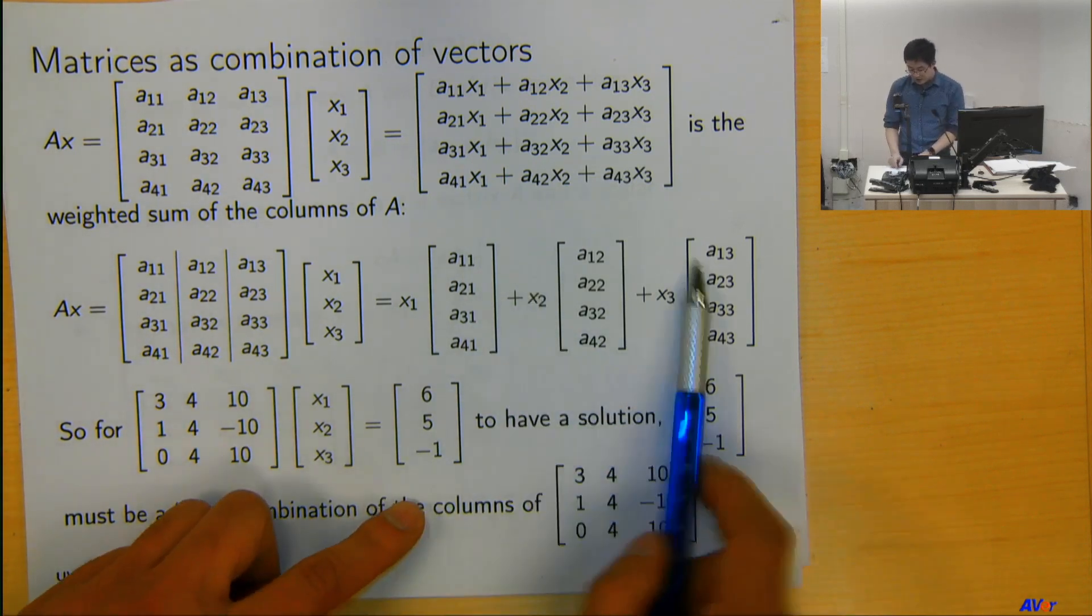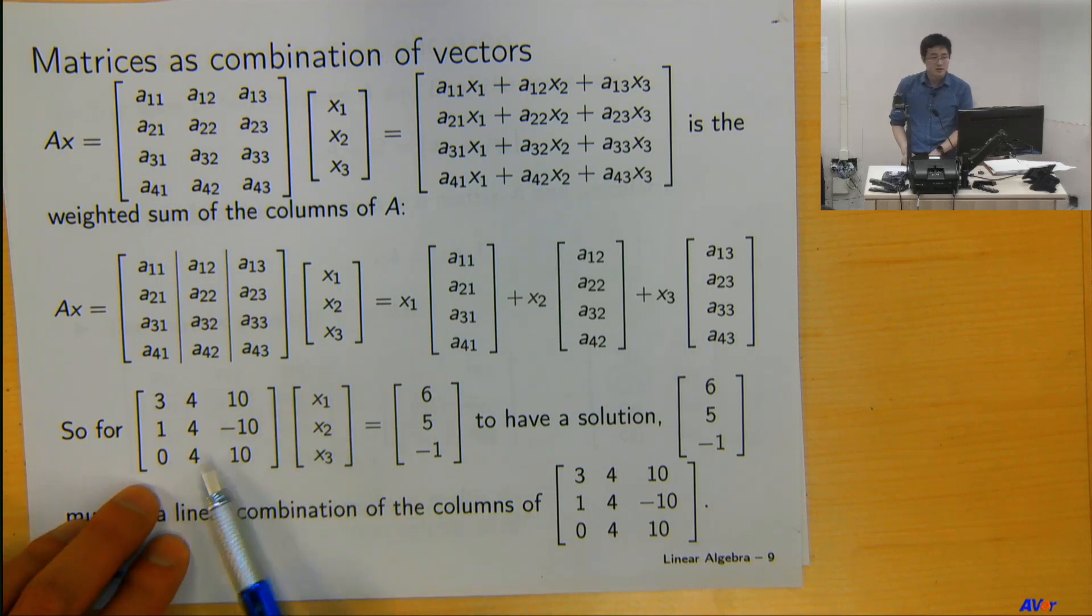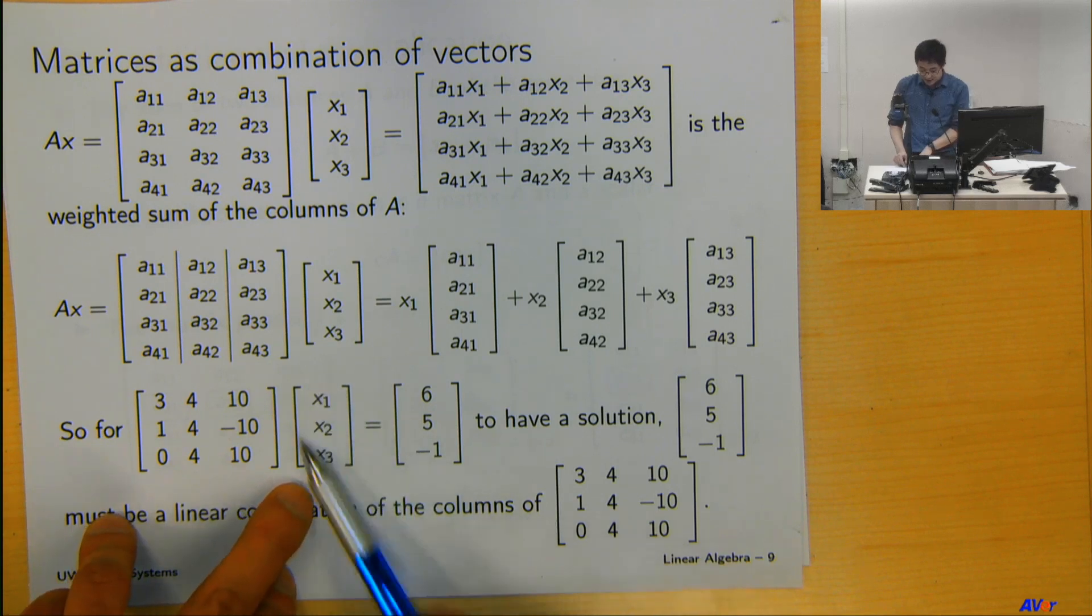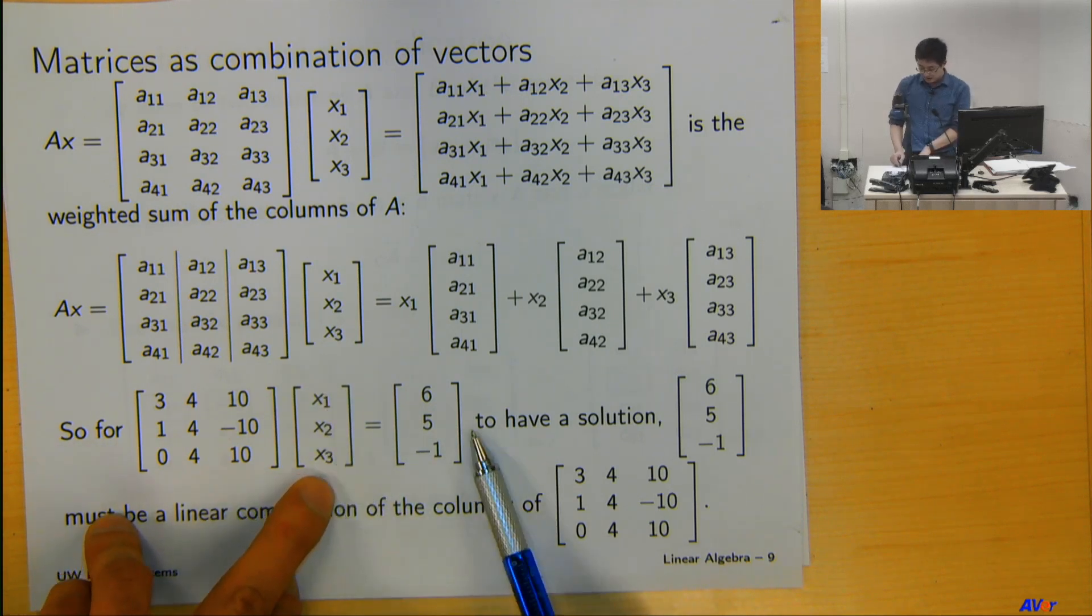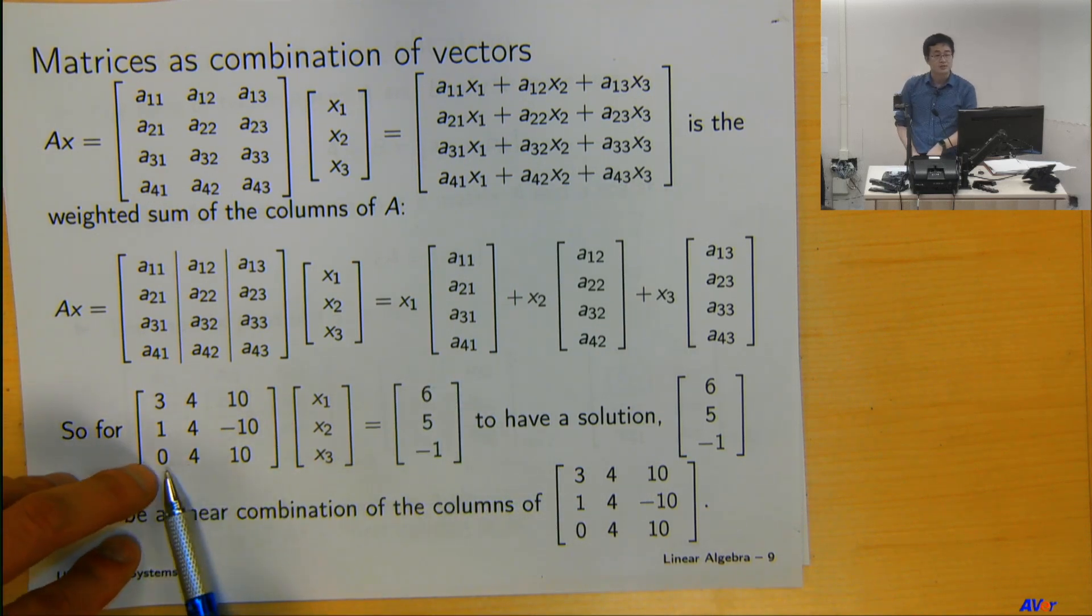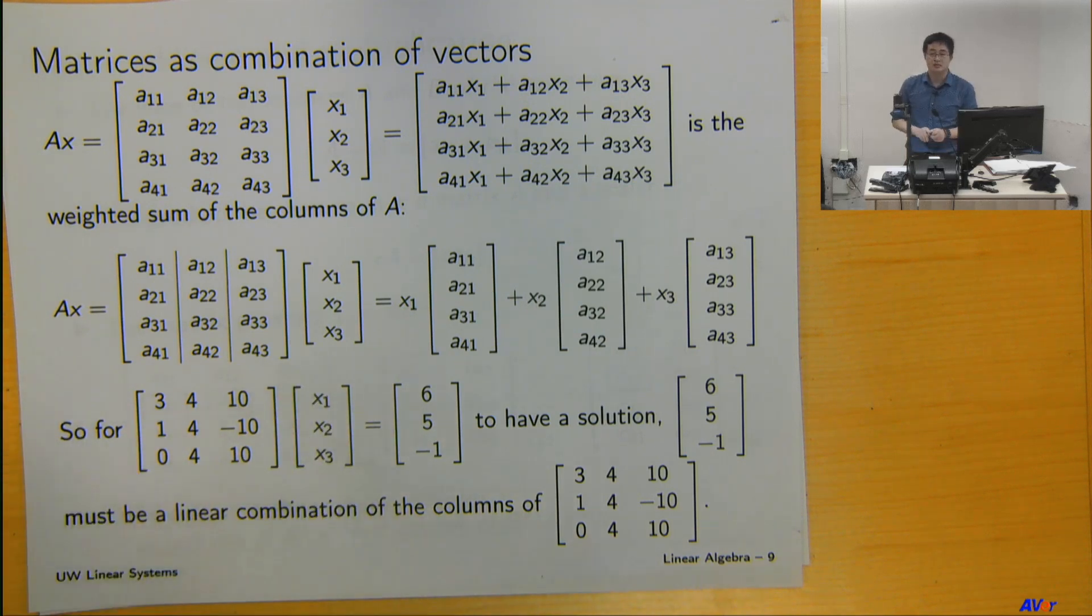But if you think about this, then it's very natural to understand that... Let's say we want to solve this equation, three variables, three equations. For this to make sense, to be able to find some values x1, x2, x3, then this result on the right-hand side must be a linear combination of the three columns in the matrix. Otherwise, it wouldn't have a solution.